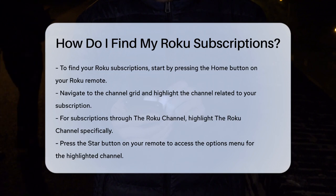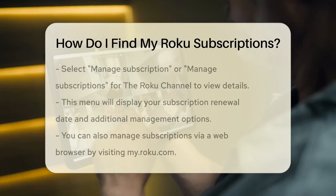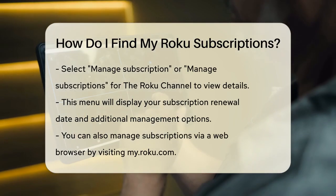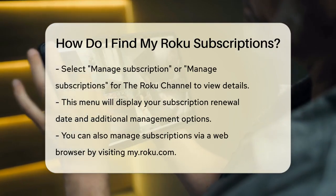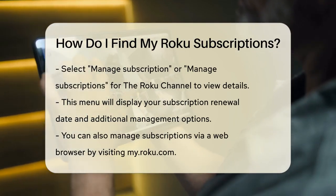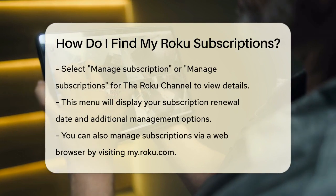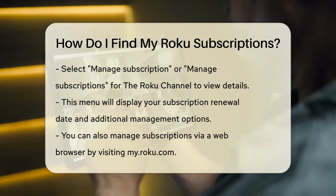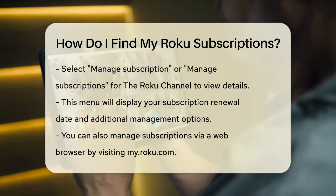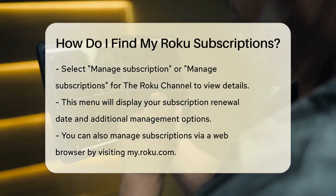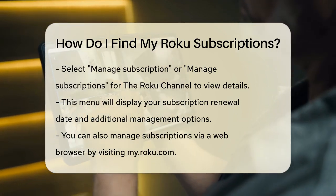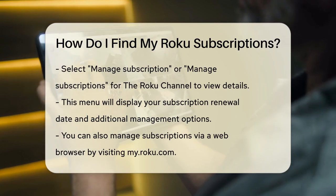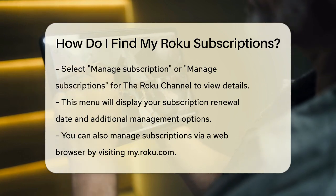For example, if it's a subscription through the Roku channel, you'll need to highlight the Roku channel. Once you've highlighted the channel, press the Star button on your remote. This will open the options menu for that channel. Here, select Manage Subscription — or Manage Subscriptions if you're using the Roku channel — which will show you the renewal date and give you additional options to manage your subscription.